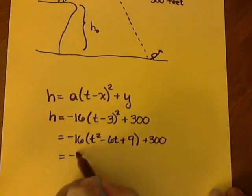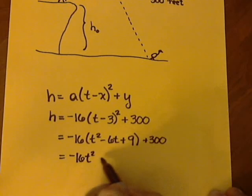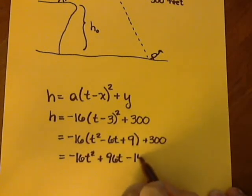Then we're going to distribute the negative 16. So negative 16 times negative 6, that's going to give me a positive 96. And then negative 16 times 9, that's going to give me negative 144.